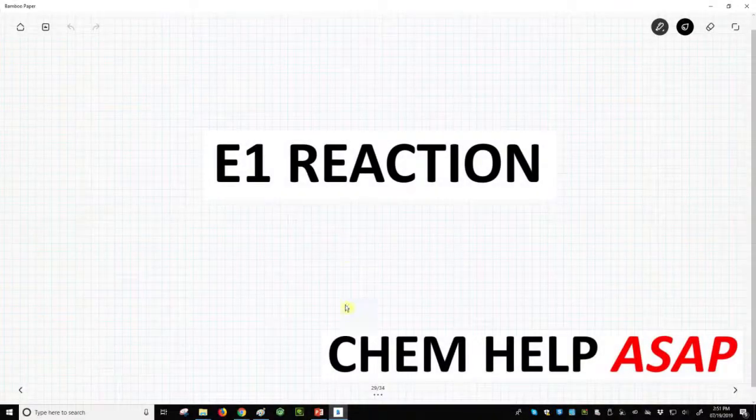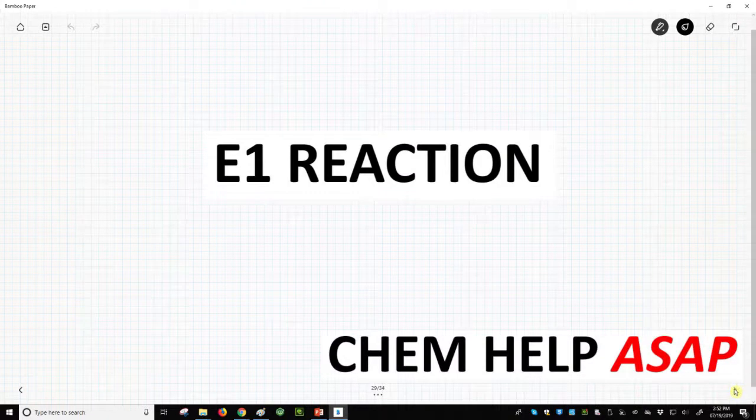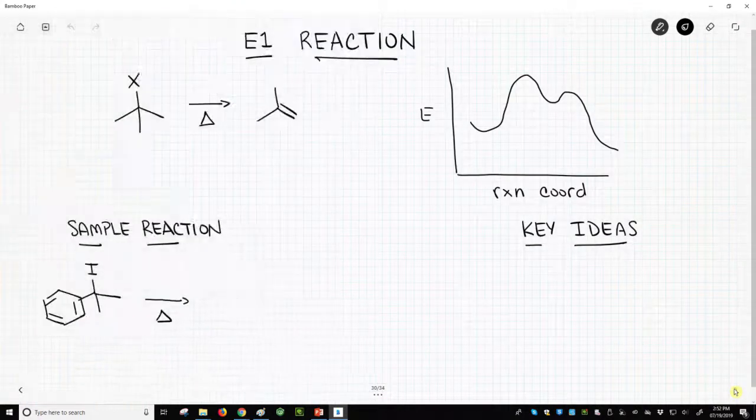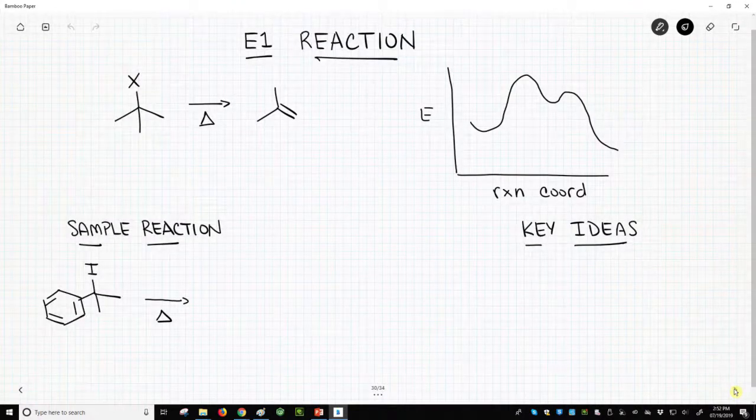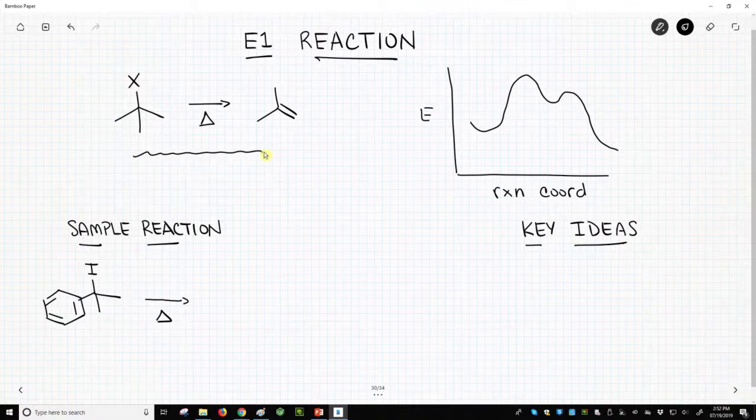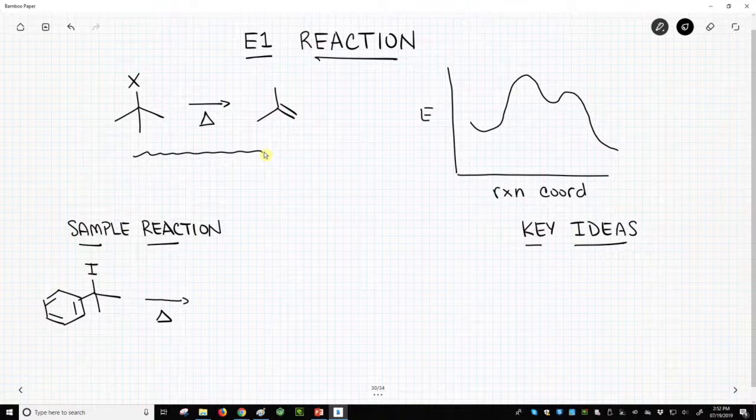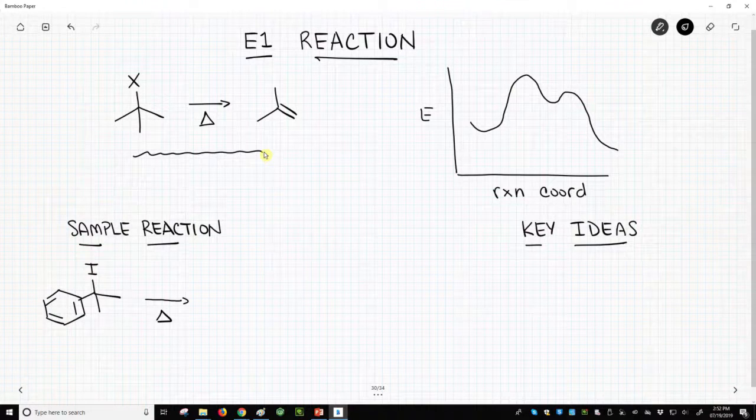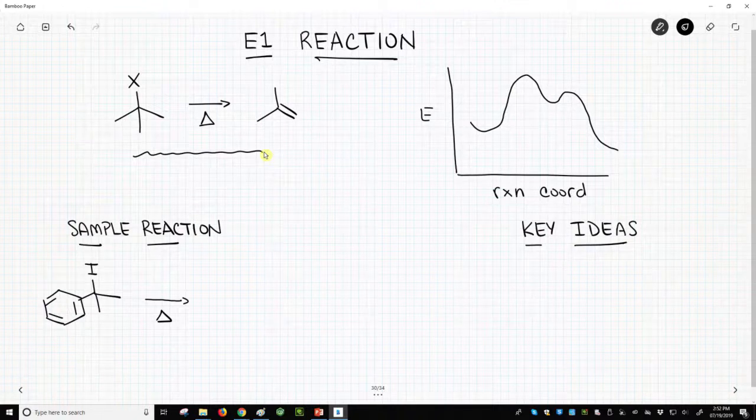Hello from Chem Help ASAP. Let's discuss the E1 reaction of alkyl halides. Here is our model reaction in the upper left. We have an alkyl halide and this is going to undergo an elimination, the E1. It's an elimination that generates a new carbon-carbon pi bond in alkene.